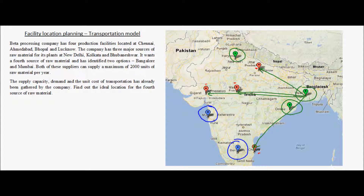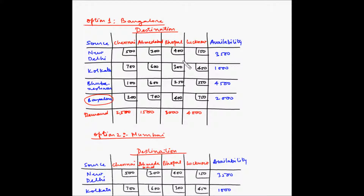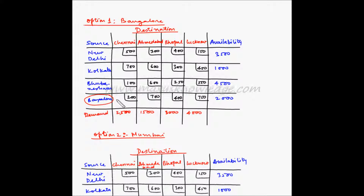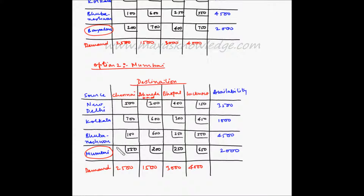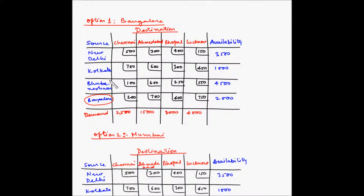We can use the transportation model to find out the difference in cost between choosing Mumbai or Bangalore. The company has created two transportation tables based on gathered information. In the first table, Bangalore is the fourth source, while in the second table, Mumbai is the fourth source. On the left side are the sources with availability on the right, destinations on top, demands at the bottom, and unit transportation costs in the middle cells.